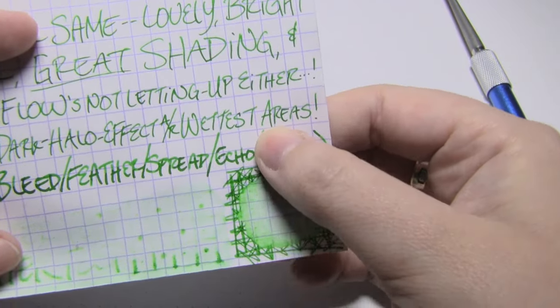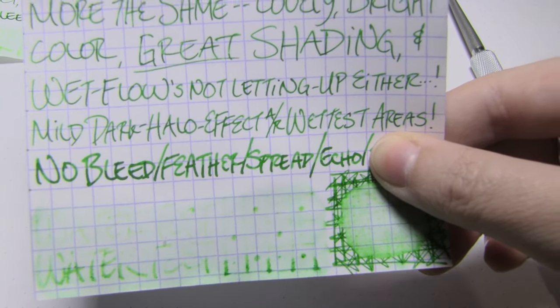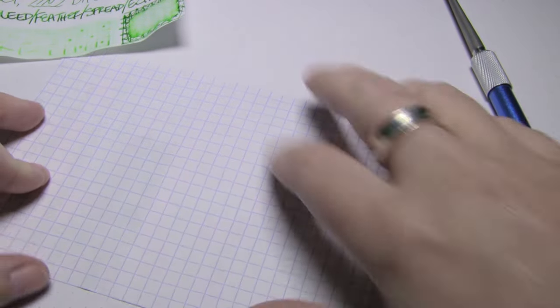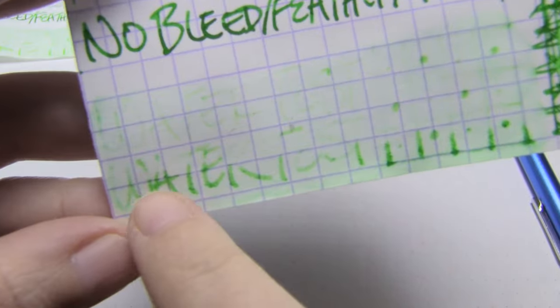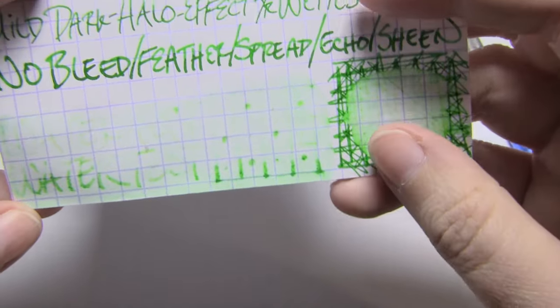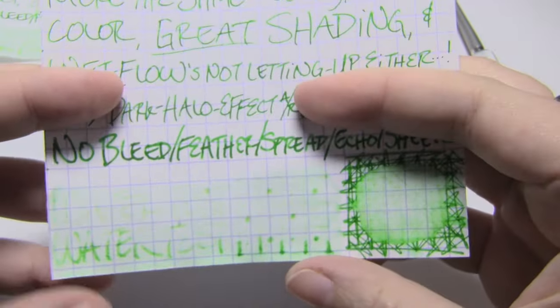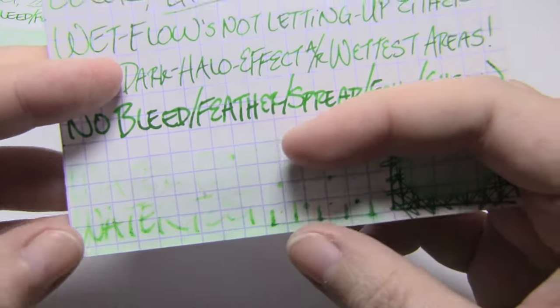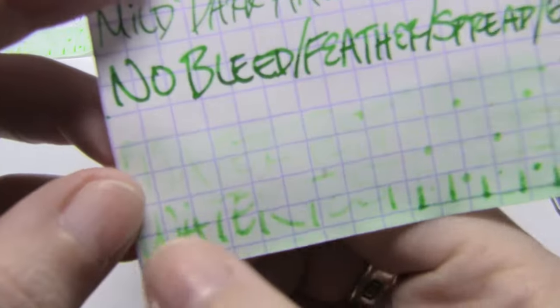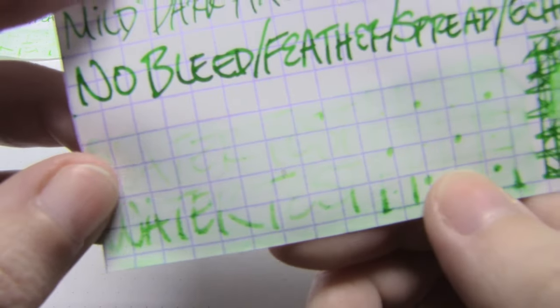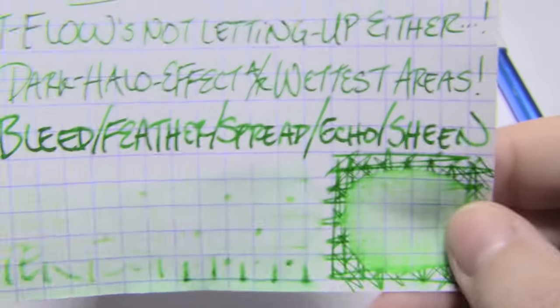I don't know why I said there's no sheen. So no bleed, no feather, no spread, no echo, which is nice. Oops, there is sheen. Now, you might see this down here. That is a flaw in the paper. This is the edge of a 38 block of paper. And it was exposed to the air for too long. I was using it as a blotter on my desk. So this is a flaw in the paper. That's why it seems woolly and explodey. Not a lot of water resistance. It's pretty gone.